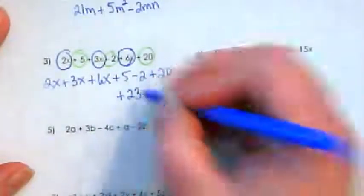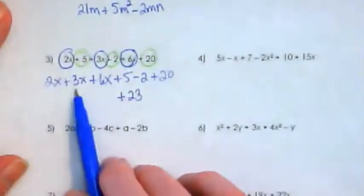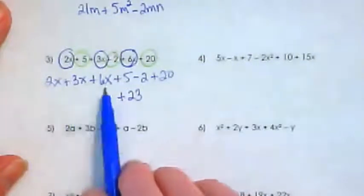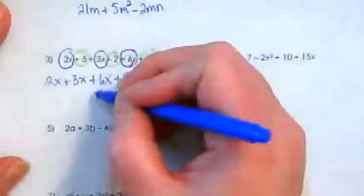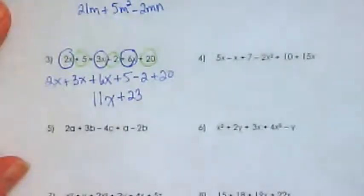So the constants, or the numbers with no variables, add up to 23. 2x plus 3x is 5x plus 6x gives us 11x. So that's how we simplify it.